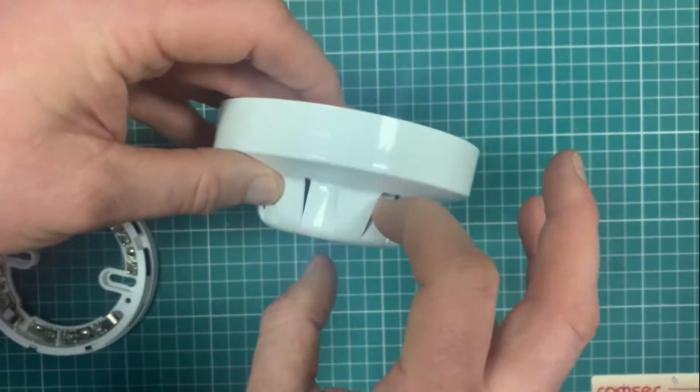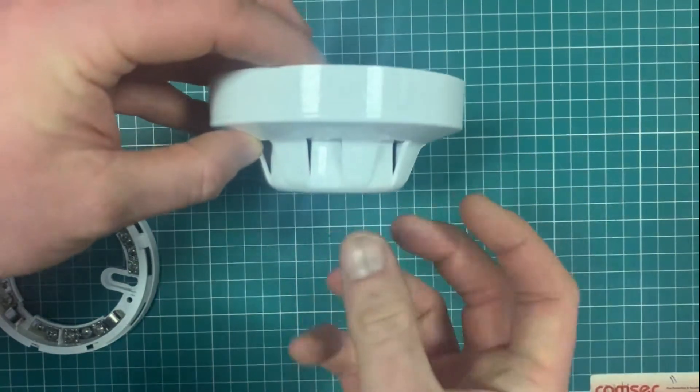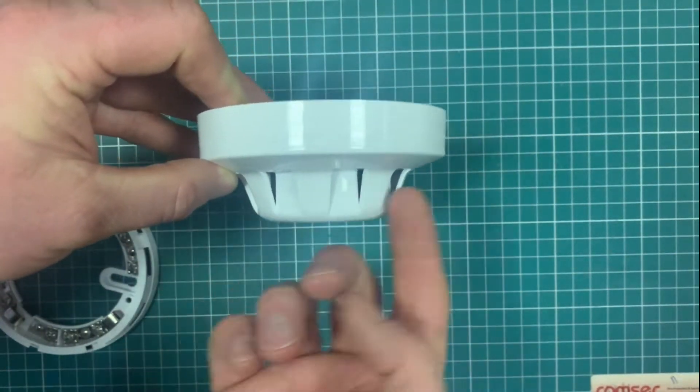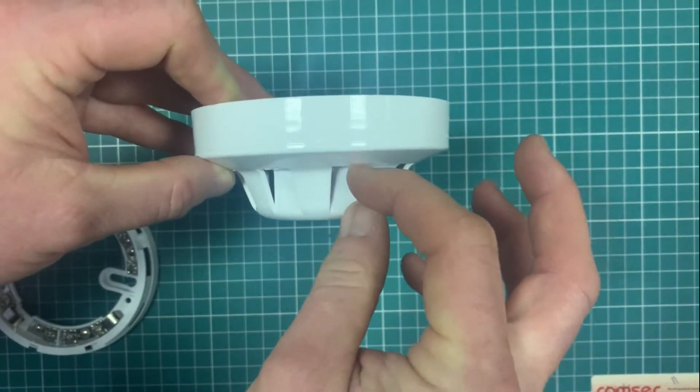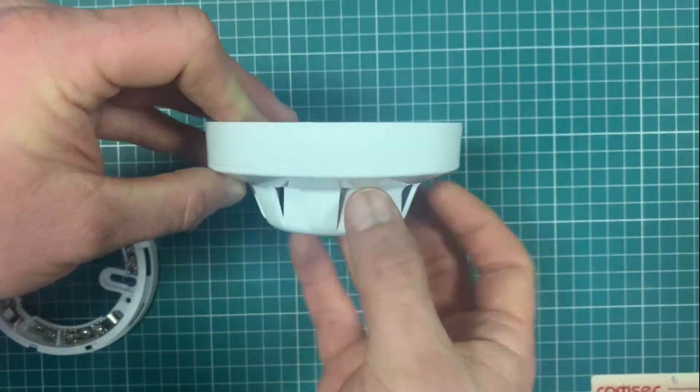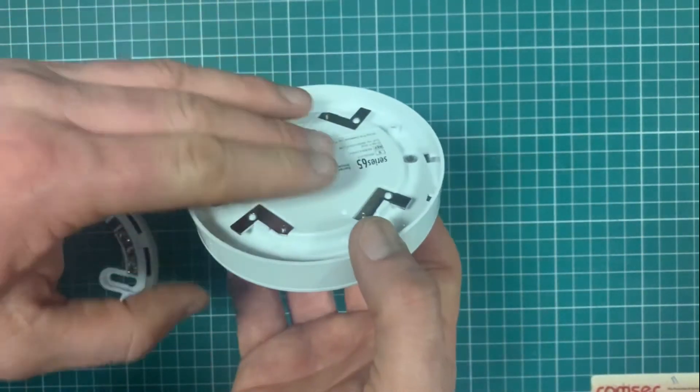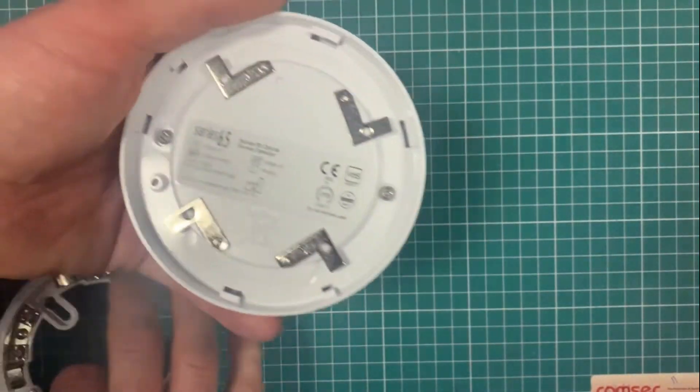The smoke goes in through here. There's an optical chamber inside the detector. Basically, the optical chamber is looking at the percentage obscuration of the light within this chamber. It sees a reduction in the light between two points, and based on how obscured the light beam is, it tells the detector to trigger and set off your alarm. Fairly basic stuff.